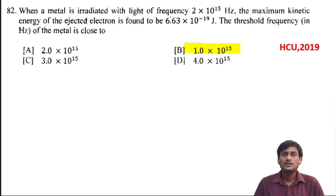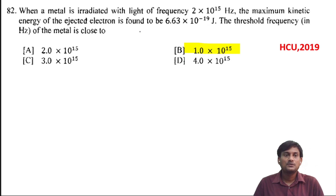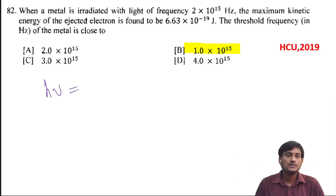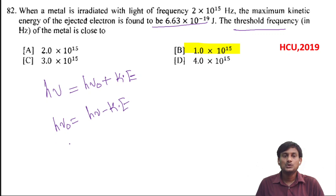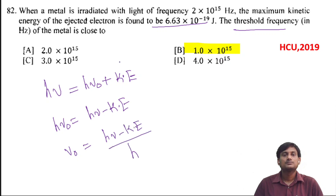When a metal is irradiated with light of frequency 2 into 10 to the power of 15 Hz, the maximum kinetic energy of the ejected electron is 6.63 into 10 to the power of minus 19 joules. The threshold frequency of the metal is close to. From the photoelectric effect: h·ν equals work function h·ν₀ plus kinetic energy. So h·ν₀ equals h·ν minus kinetic energy, and ν₀ equals (h·ν minus KE) divided by h.